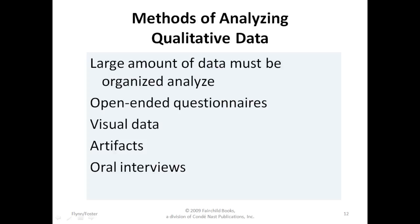Looking at methods of analyzing qualitative data, you can't control the stream of your conversation and the results that you get in qualitative data. There's going to be a large amount of data and it's going to have to be organized and analyzed. Because you have open-ended questions, you don't really know what information you're going to get back or where it's going to go. You can also have visual data, you can have artifacts, and you can have oral interviews, which we all talked about in Chapter 9.